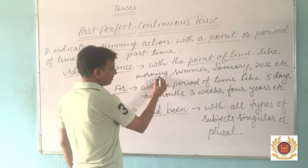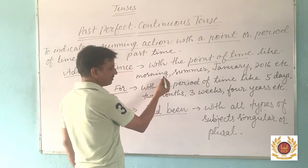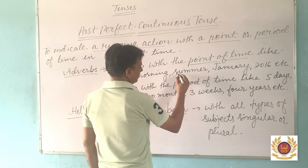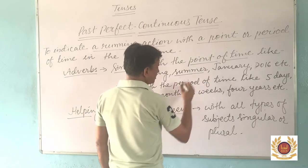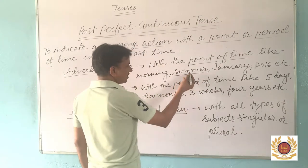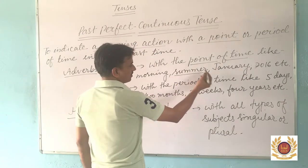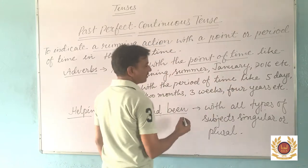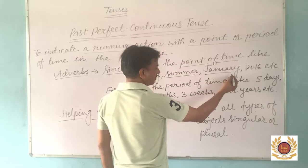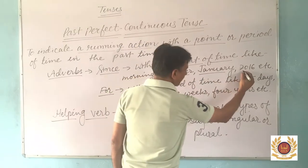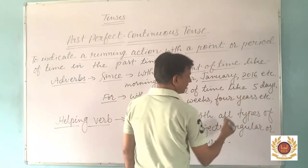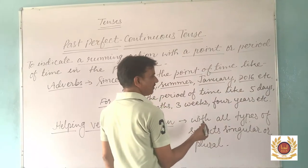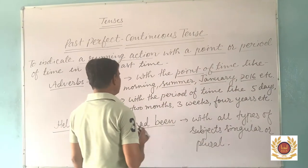Examples of 'since' with a point of time: since morning, since evening, since noon, since night. Any season — since summer, since winter. Any month of the year — since January, since December. Any kind of year — since 2016, since 1947, etc. These types of times and words indicate or show a point of time.